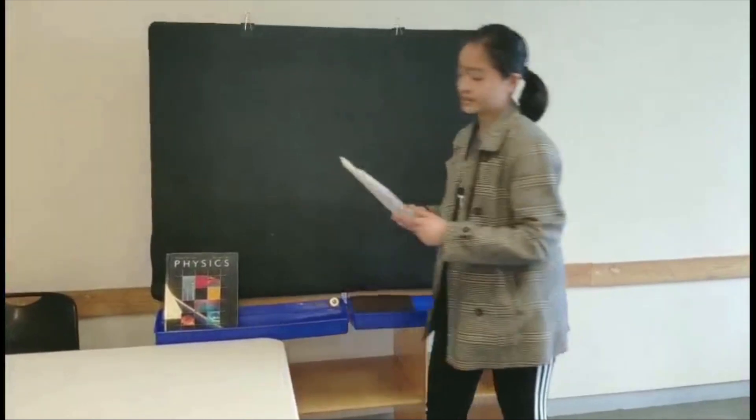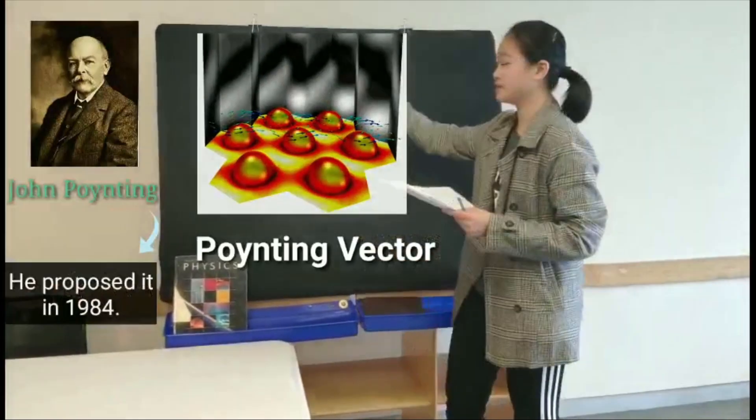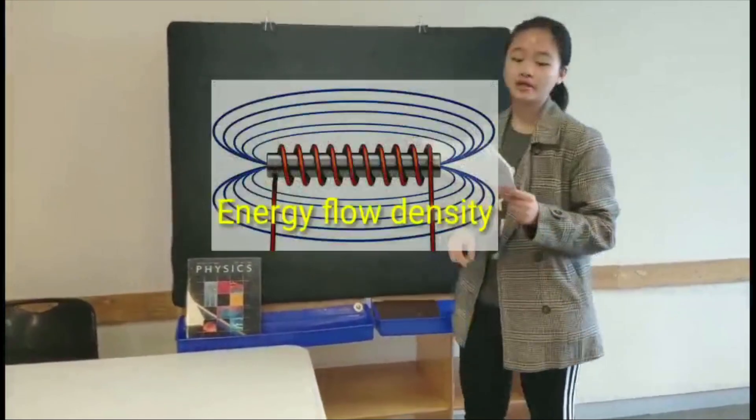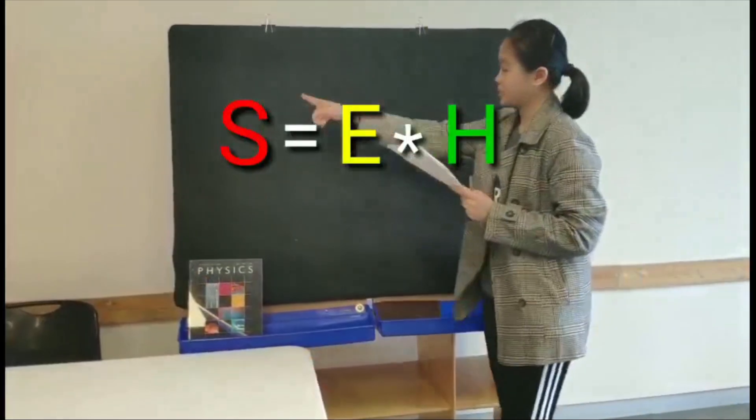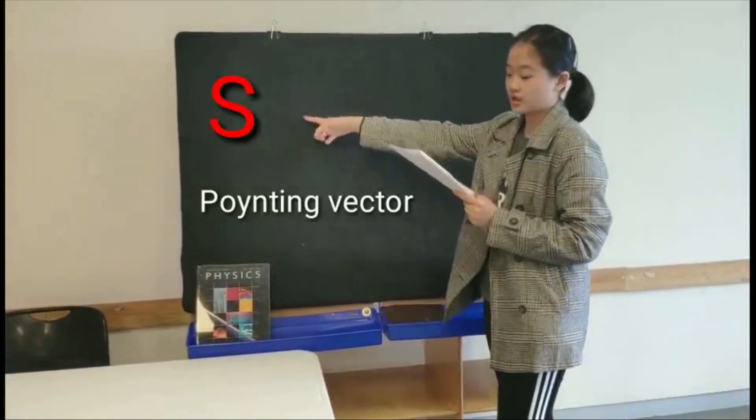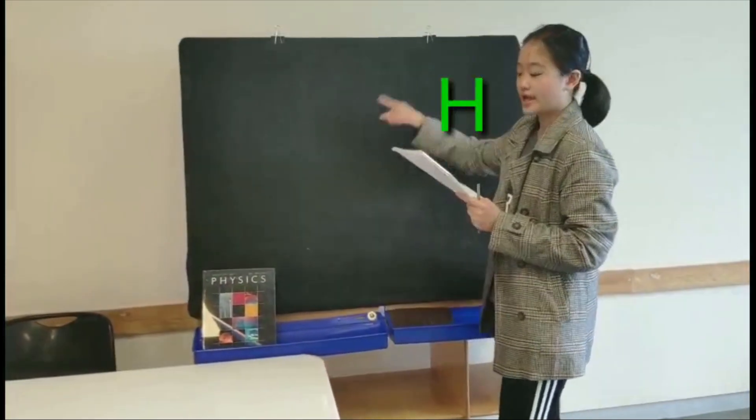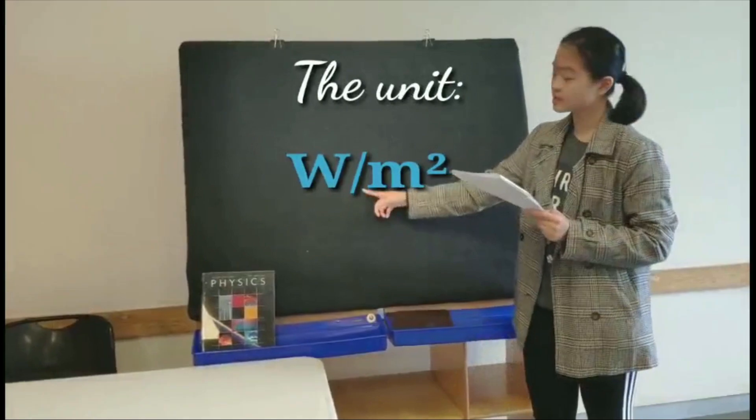Okay, the magnitude of the energy of EMW depends on Poynting vector, which is S equals E times H. Poynting vector means the energy flow density vector in electromagnetic field. In this expression, S represents Poynting vector, E represents electric field strength, H represents magnetic field strength. The unit is watts per meter squared.